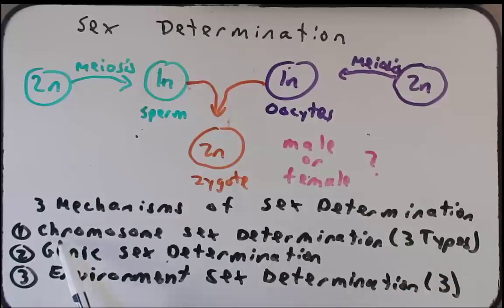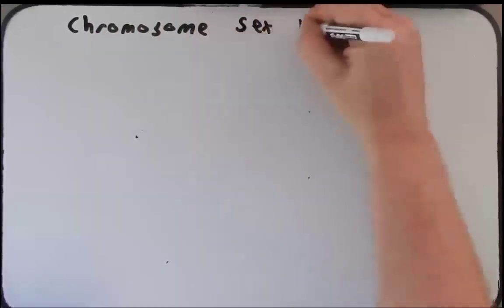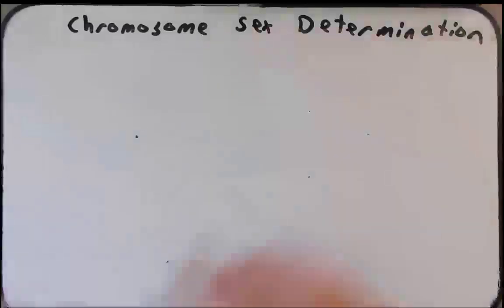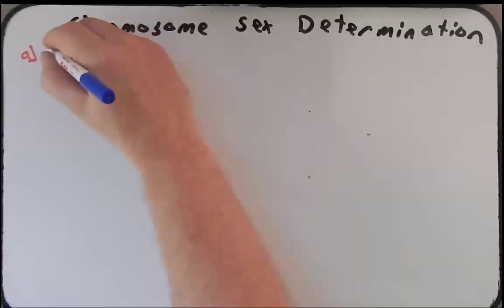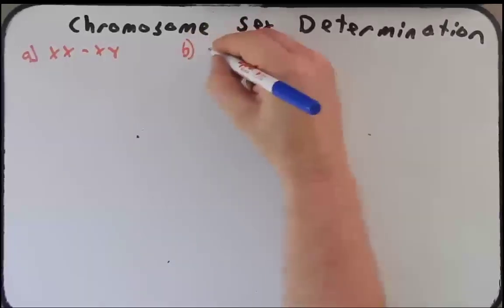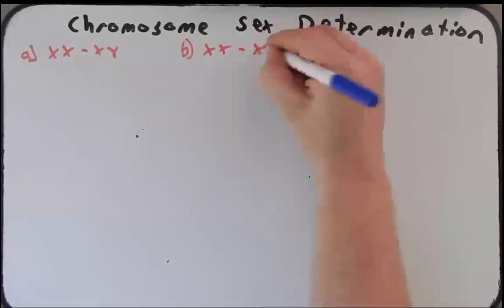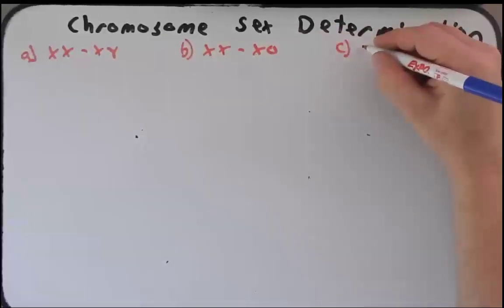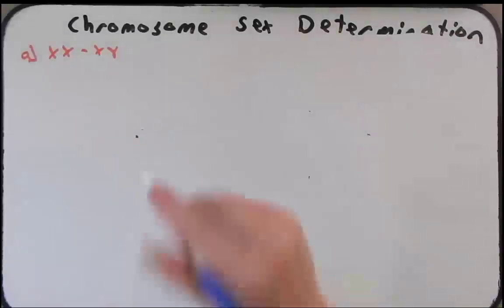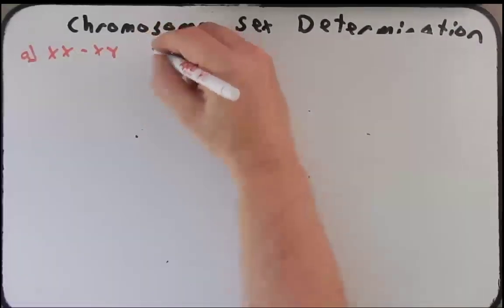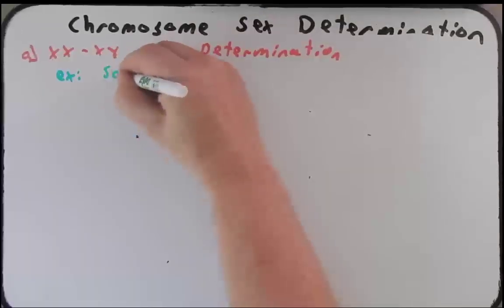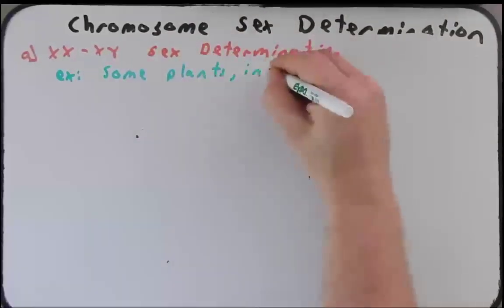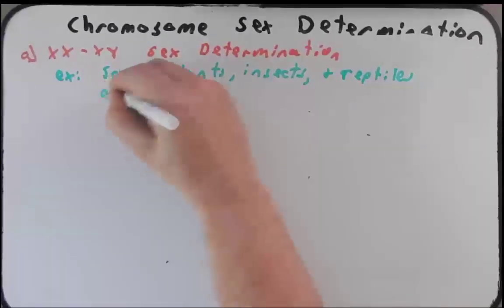Let's start with chromosomal sex determination. There are going to be three examples using chromosomes as sex determination. The first is the XX/XY system — we'll spend the most time on that. Then we'll also spend some time on the XX/XO system, and then the ZZ/ZW system. For the XX/XY system, some examples include some plants, insects, and reptiles, but we see it in all mammals.